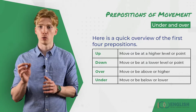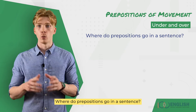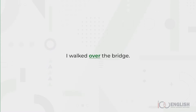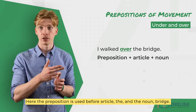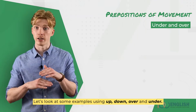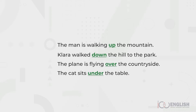Over means that I walked above the bridge. We use 'over' for something that is moving above or higher than something else. Here's a quick overview of the first four prepositions: 'up' means someone or something moves or is at a higher level or point. 'Down' means someone or something is at a lower level or point. Where do prepositions go in a sentence? The preposition is used before the article and the noun, for example: 'I walked over the bridge.' Examples: The man is walking up the mountain. Clara walked down the hill to the park. The plane is flying over the countryside. The cat sits under the table.